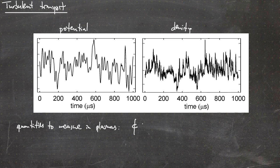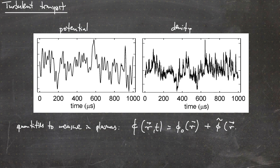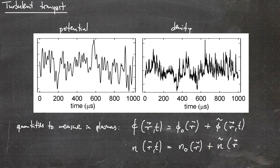The potential is a function of both position and time, where we have a background potential phi-naught which is independent of time — just a function of position — plus the varying part phi-twiddle, which is a function of both position and time. The same is true for the density: a function of position and time, where we have the unperturbed background density n-naught plus the perturbed part, which is again a function of both position and time.